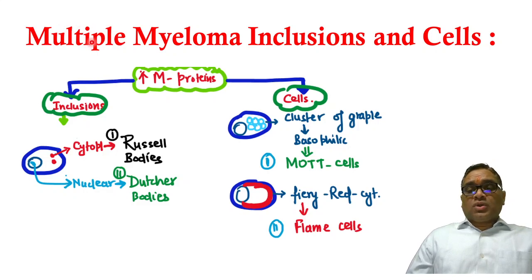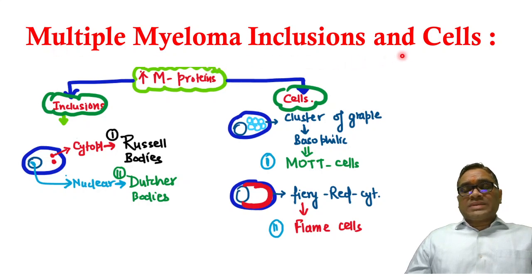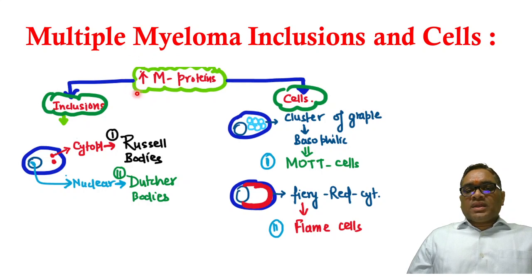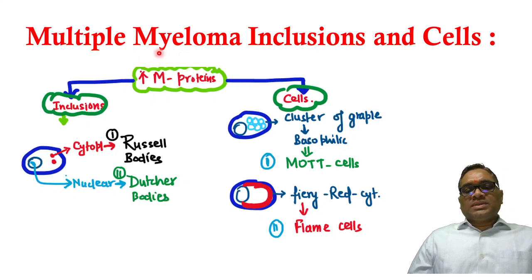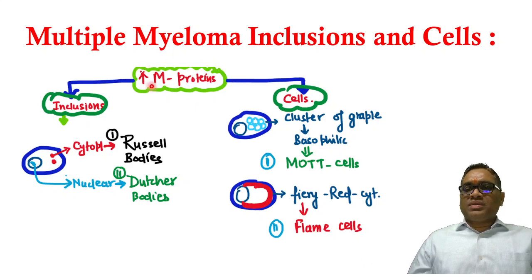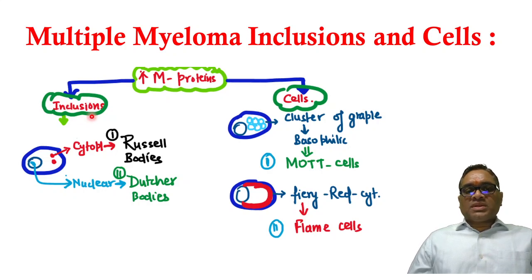In this high-yielding short, we will cover multiple myeloma inclusions and their cells. In multiple myeloma, there is an increase in light chain monoclonal M proteins. These M proteins in excessive amounts will be deposited into the cytoplasm of the plasma cells, giving rise to two types of inclusions.